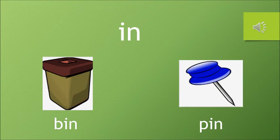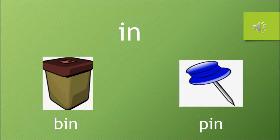In. Sound of I is E, sound of N is N, so it is In. And the words are Bin and Pin. Bin is a dustbin — where we throw all our trash. And pin — can you see this pointed thing? It is called a pin. This is a board pin, when we put up our charts on the board. So the words are Bin and Pin.